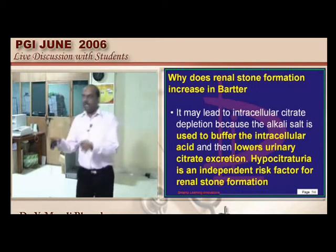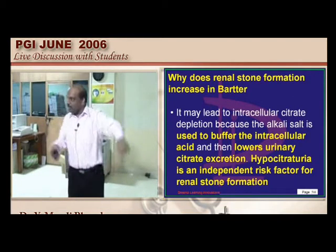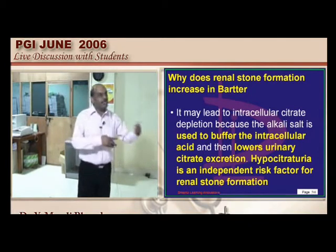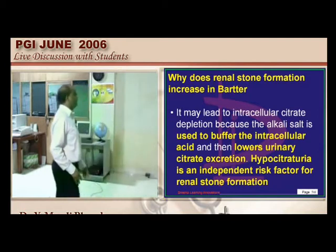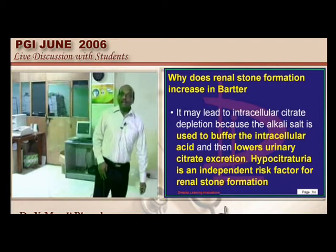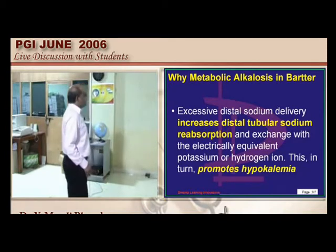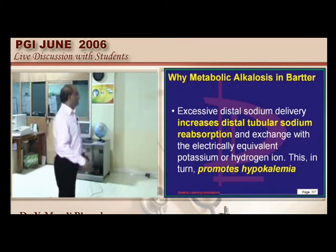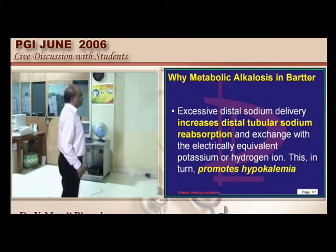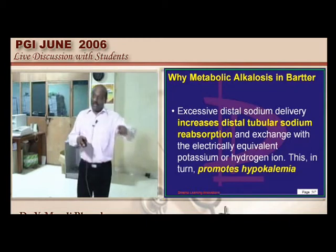Summary: In Bartter, loss of NaCl stimulates JGA → more aldosterone → intracellular acidosis in tubular cells → exhausts citrate → hypocitraturia → renal stone risk. Metabolic alkalosis occurs because excessive sodium delivery interferes with potassium-H+ reabsorption, causing H+ loss into urine. Bartter patients also develop hypercalciuria, further predisposing to nephrocalcinosis.